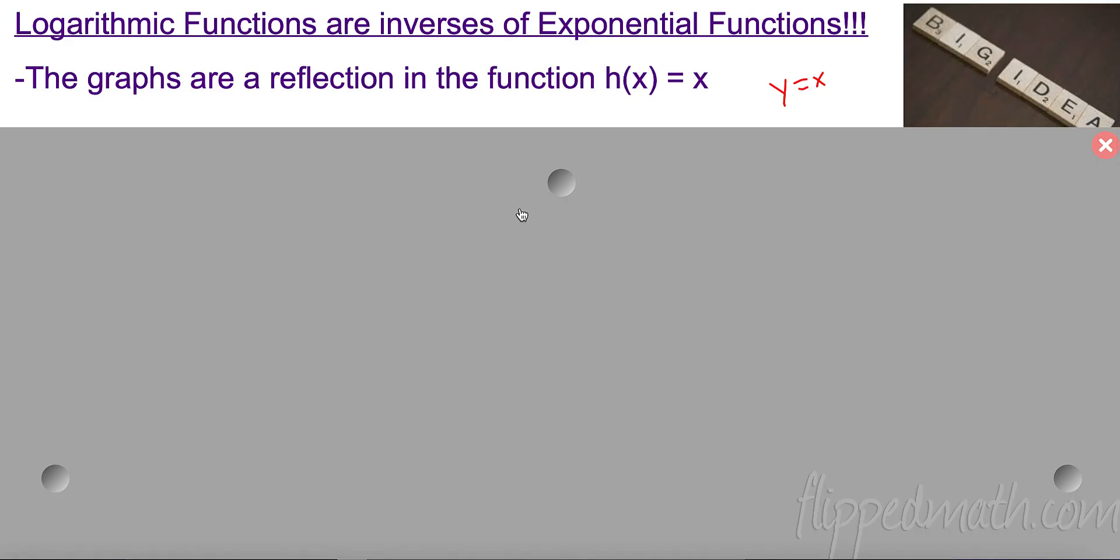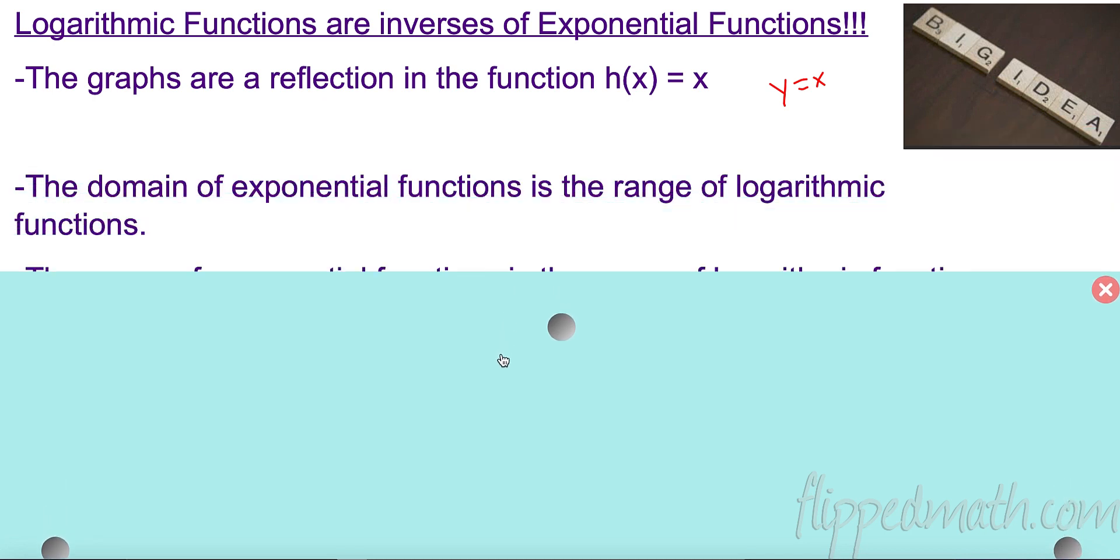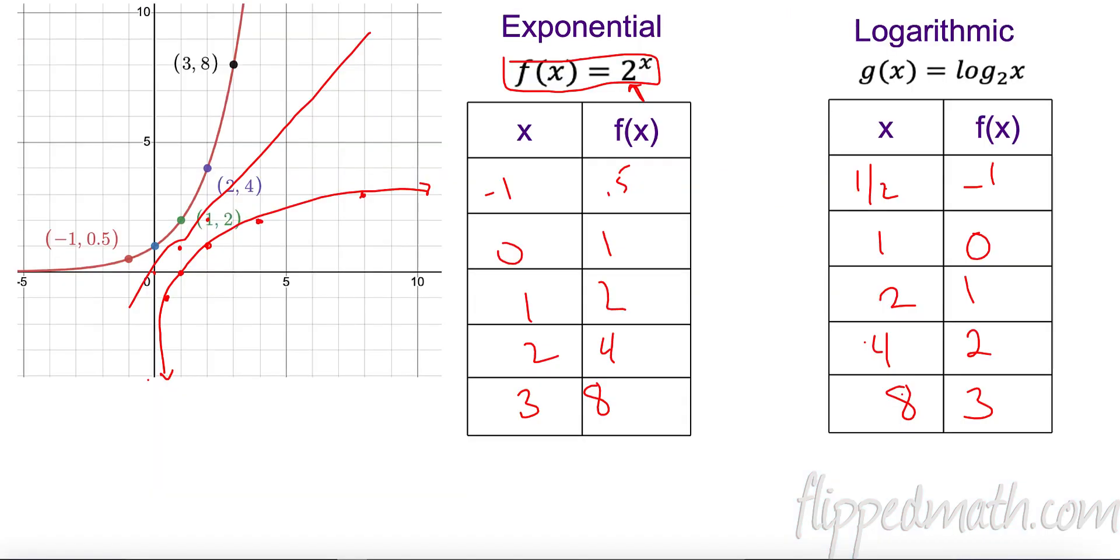What else? The domain of the exponential function is the range of the logarithmic function. So the domain of the exponential, the x's are the y's of the logarithmic function. No way. That can't be true. Let's see. Here's my x's. Negative 1, 0, 1, 2, 3. So my x's are my y's in my logarithmic. Negative 1, 0, 1, 2. No way. It's true. Incredible. So we got that going.